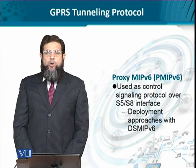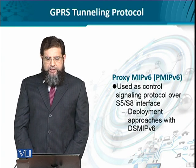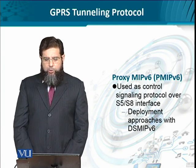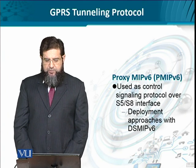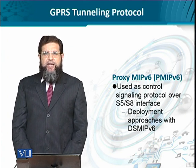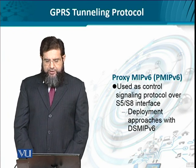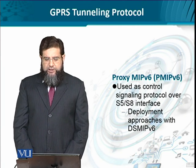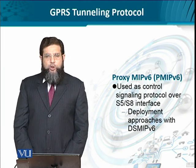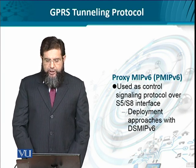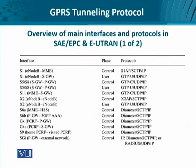As an alternative to the GPRS tunneling protocol, we also have the Proxy Mobile IP version 6. It is used to carry control signaling over the S5 and S8 interfaces. The options available for either GTP and the dual stack depend on the implementation at the user equipment as well as the radio access network.